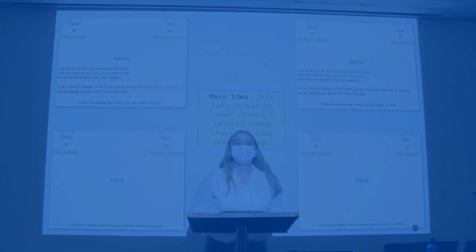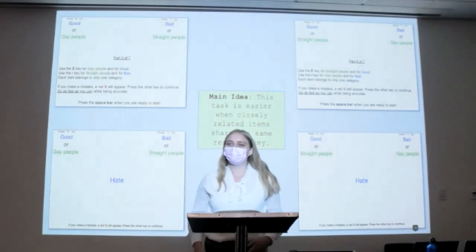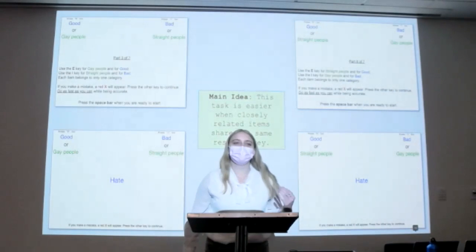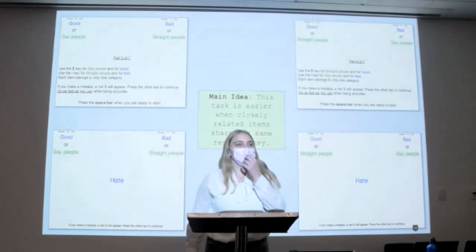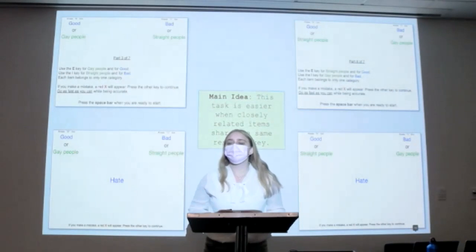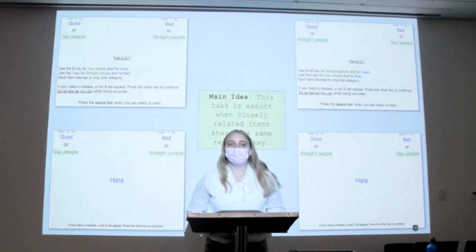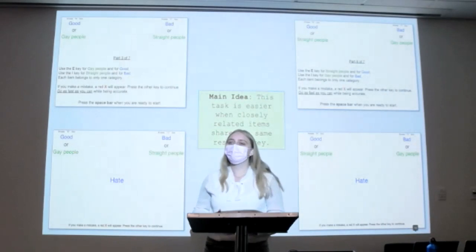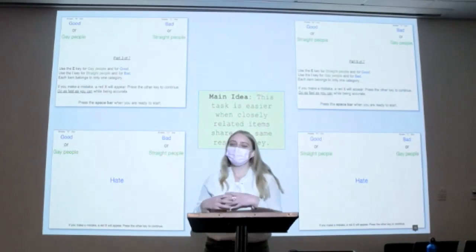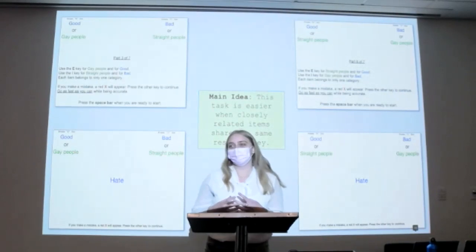Hi, everybody. I am here to talk about implicit association tests, abbreviated as IAT, which was developed by Greenwald and his colleagues in 1998 to measure people's automatic associations between evaluations or between concepts and evaluations.